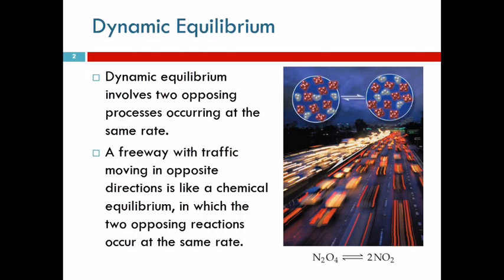In a chemical reaction, we have a dynamic equilibrium. We have two opposing processes that occur at the same rate, but they oppose each other.